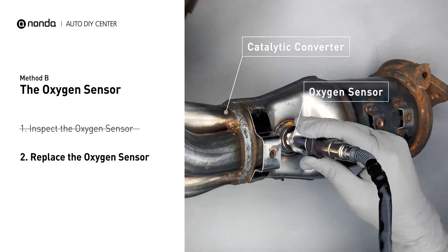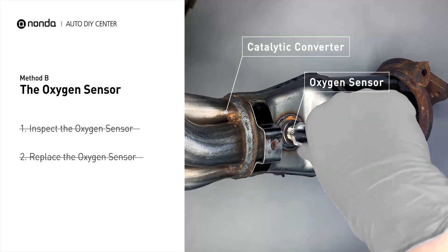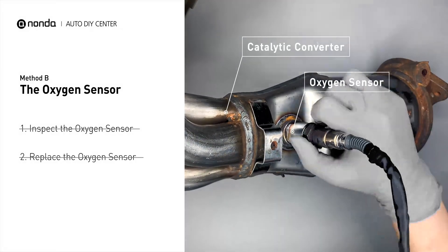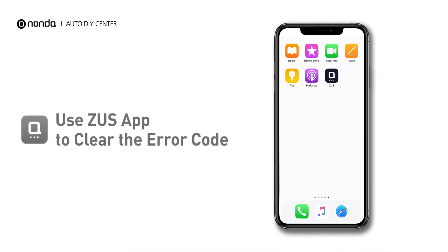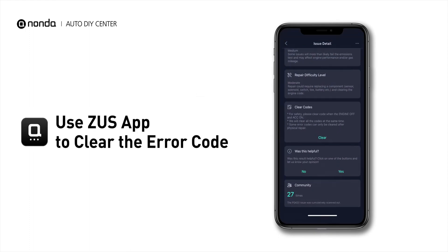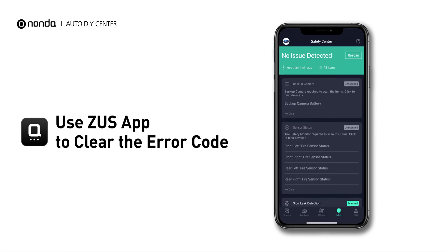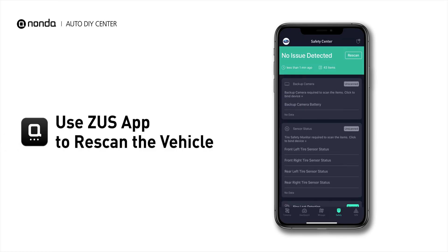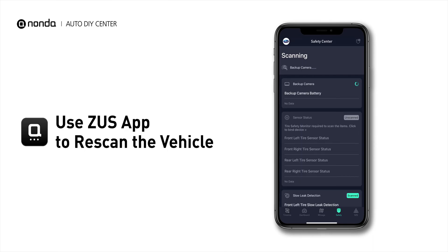If damages are found, then replace the oxygen sensor. So here are two of the most practical solutions to fix the P0410 error code. After the repair, you can now use the Zeus app to clear the error code, and tap the Rescan button one more time to make sure everything is fine with your vehicle.